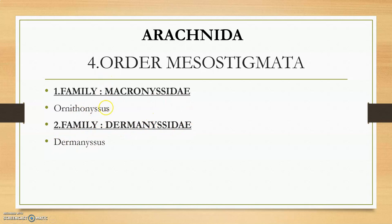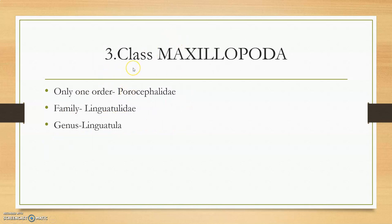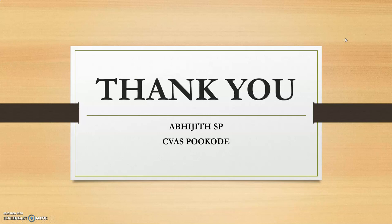Ornithonyssus (Macronyssidae) and Dermanyssus (Dermanyssidae) are the 2 genera. The third class is class Maxillopoda — earlier known as phylum Pentastomida. It was reclassified into Arthropoda and we have only one order, family Linguatulidae, genus Linguatula. I think by this video you came across all the data about the arthropods.